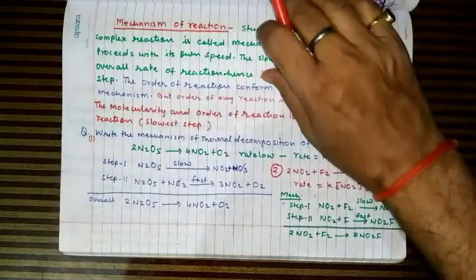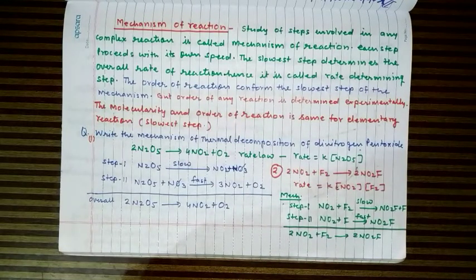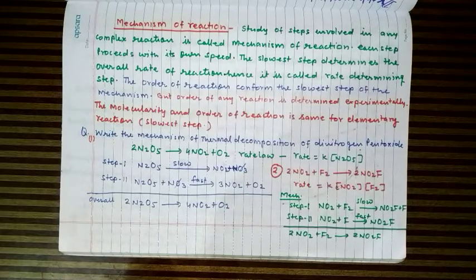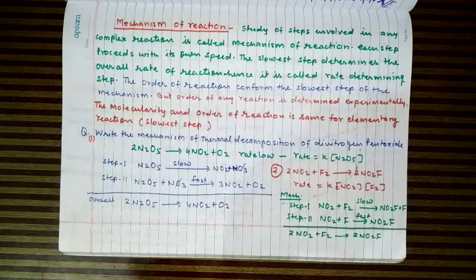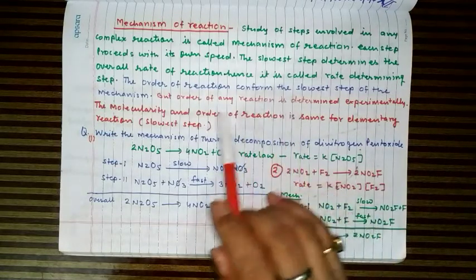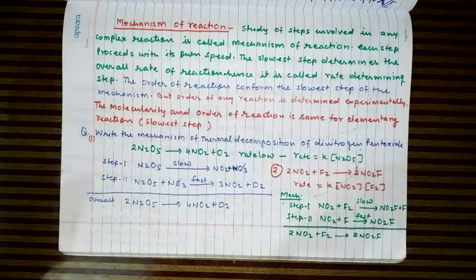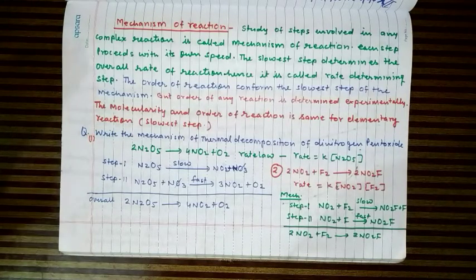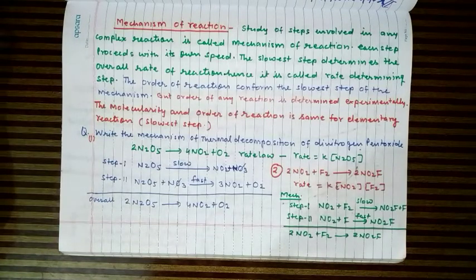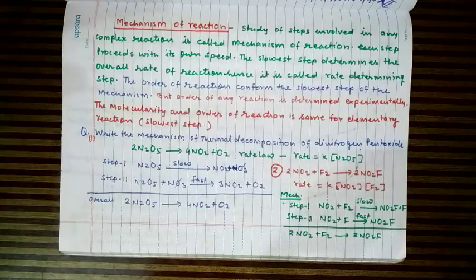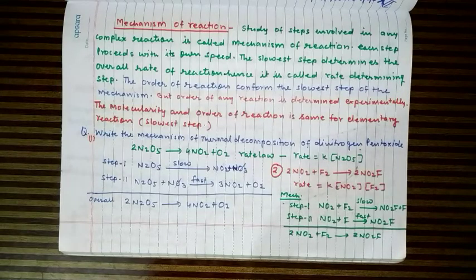When we study the steps involved in any complex reaction, this study of steps is called the mechanism of the reaction. The mechanism is very helpful in knowing which step can be controlled to enhance the yield of the product. Each step in the mechanism is like an elementary reaction and takes place with its own speed — every step proceeds with its own rate.